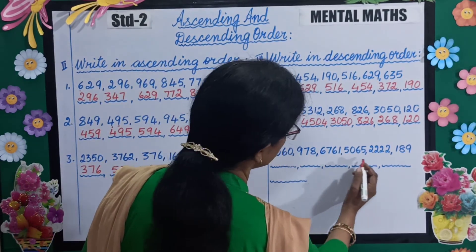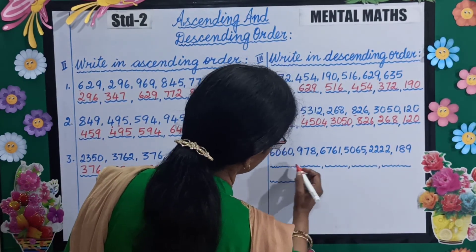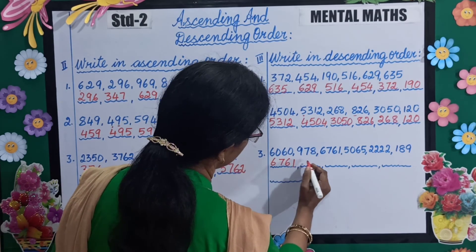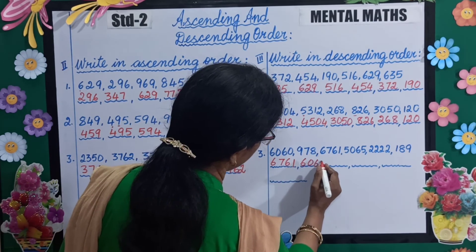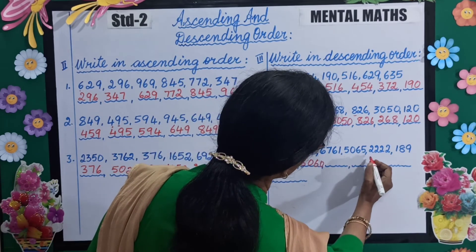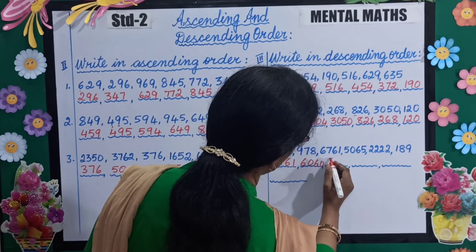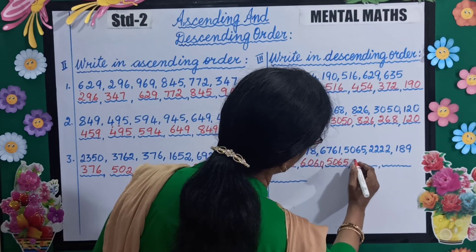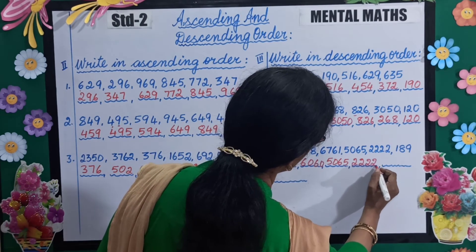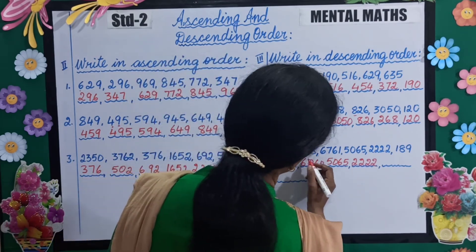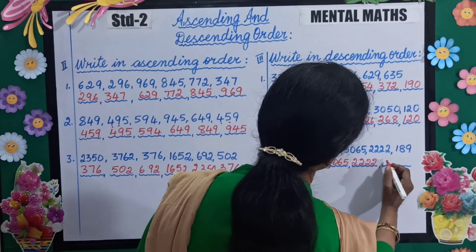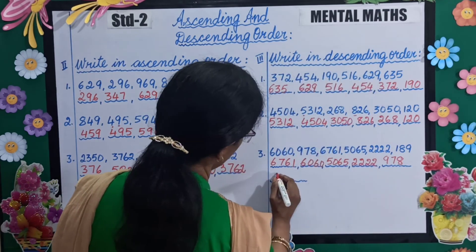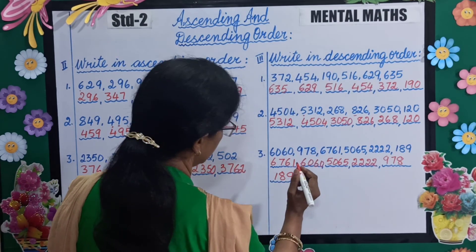Number 3 — which is the greatest number, children? 6761. Next is 6060, next 5065, then 2222, then 978, and last is 189.